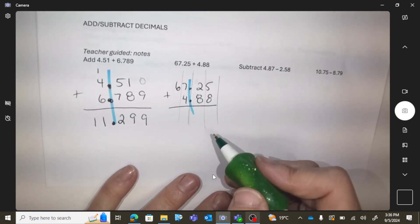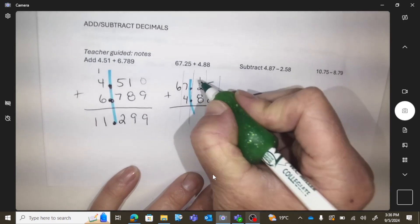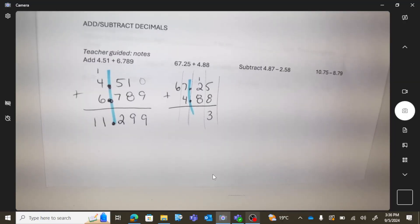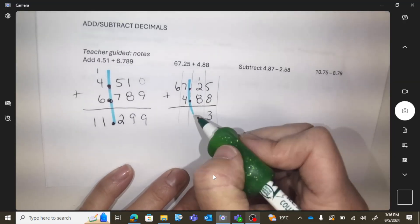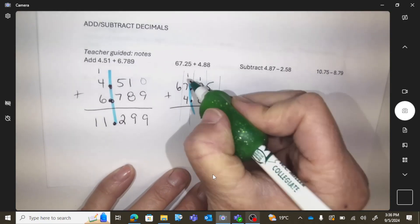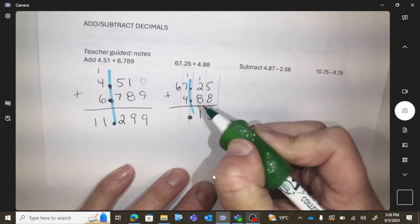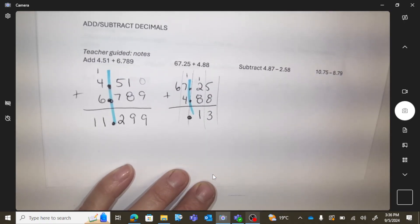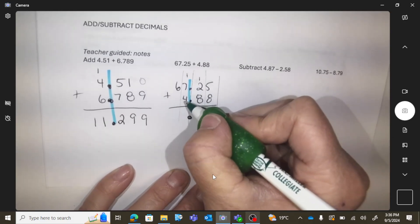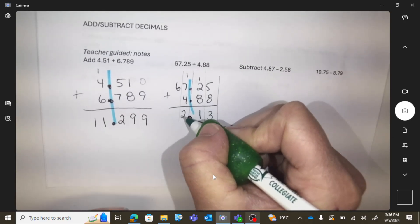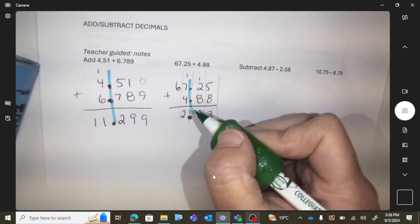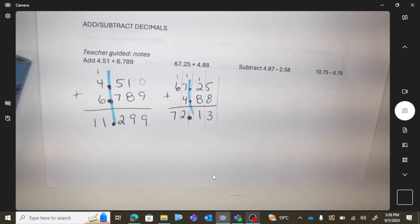The five and eight are together in a column, so that's thirteen with a carry. Eight, two, and one is eleven, so that's a carry. The decimal keeps going in that same line, and then seven, four, and one is twelve, and then six plus the one.